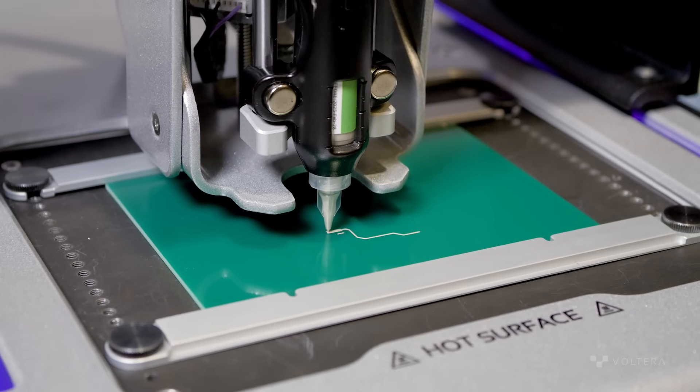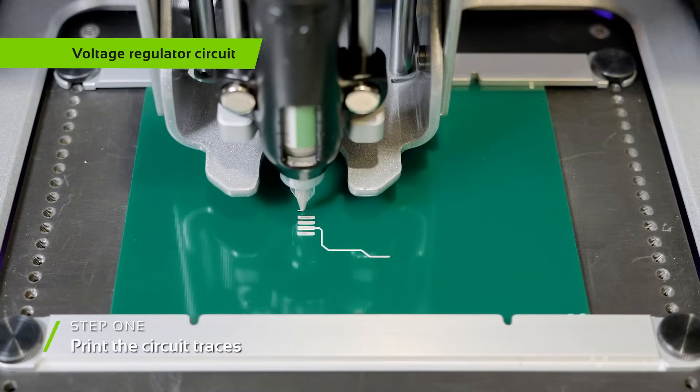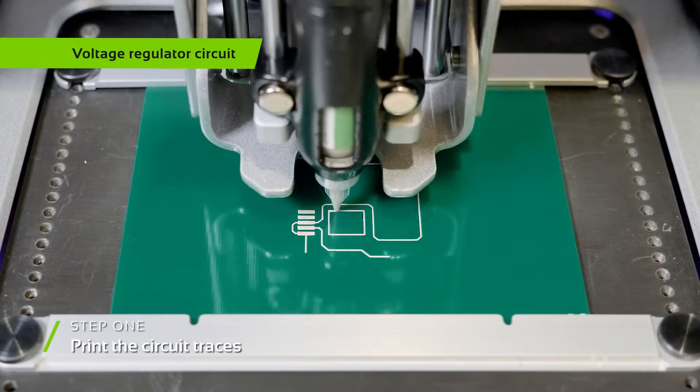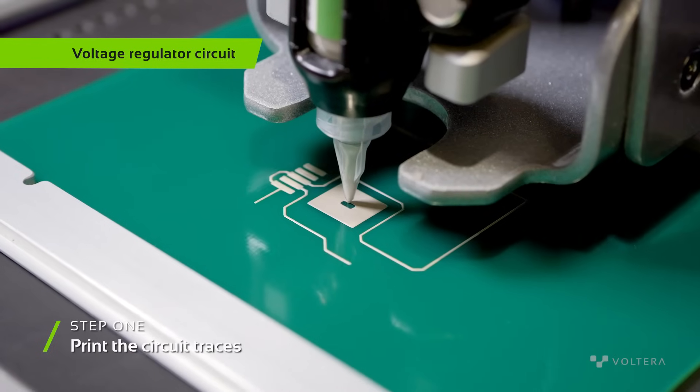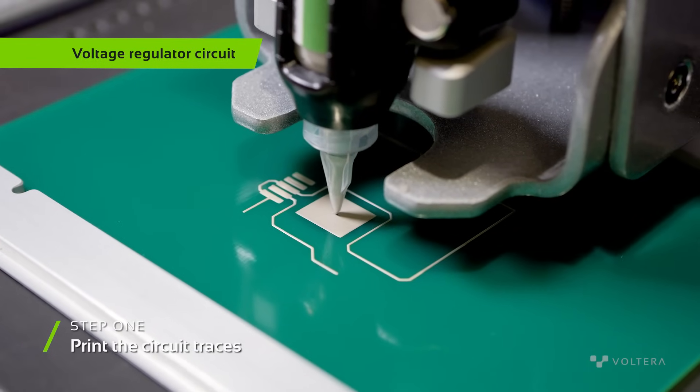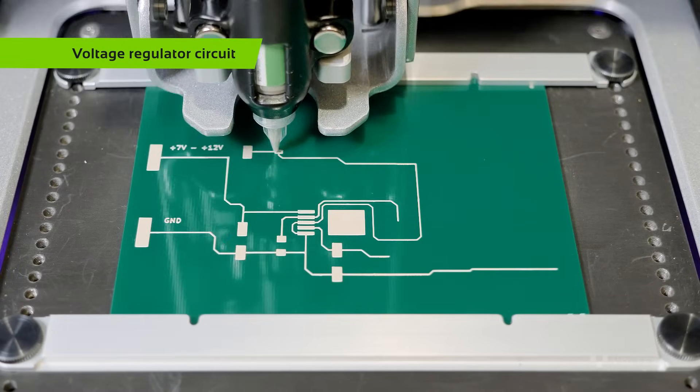The first PCB in the project is the Voltage Regulator Circuit. This board is designed to teach students about different voltage regulators by demonstrating how to convert the voltage from a 9V battery down to 5V.